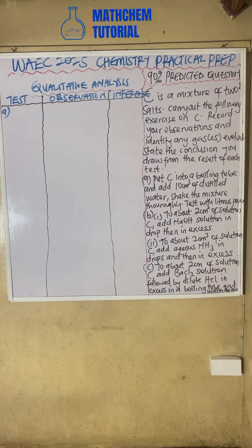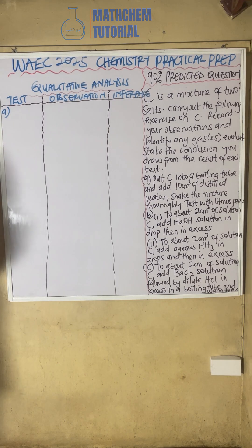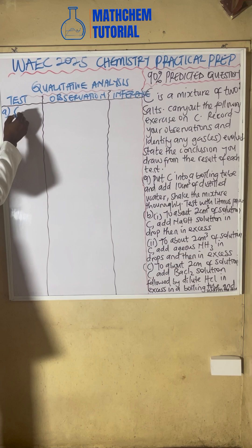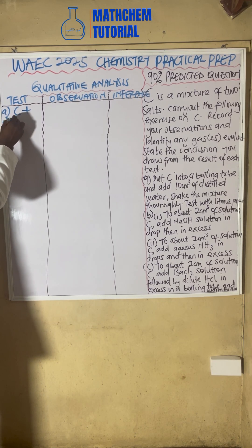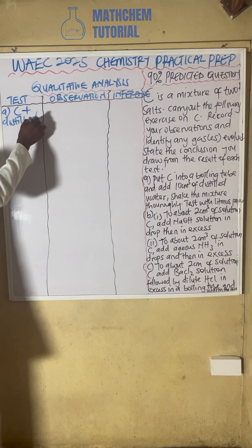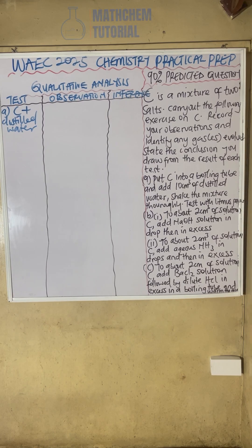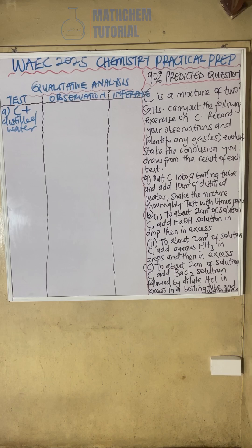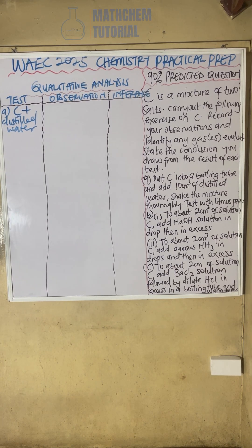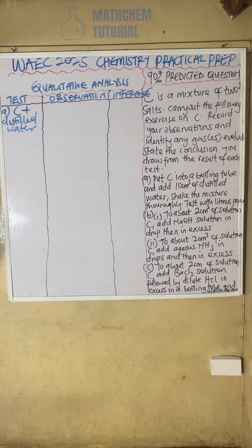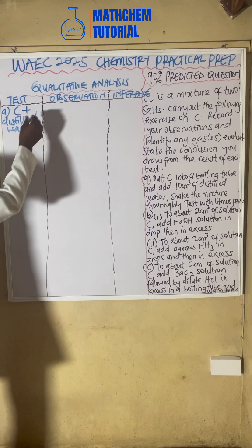Part A says: put Sample C in a boiling tube and add 10 cm³ of distilled water. So Sample C plus distilled water — what will you observe? The observation is that C dissolves in water to give a clear blue solution.